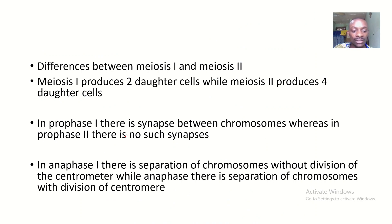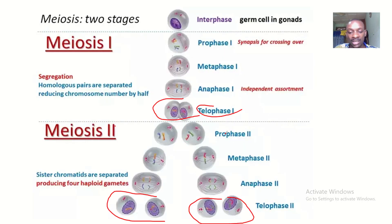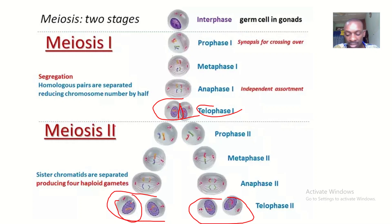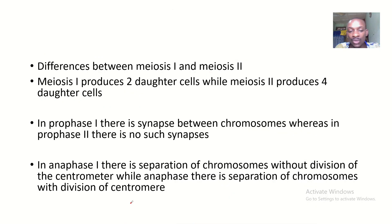In myosis 1, there is synapsis between chromosomes, whereas in myosis 2, there is no such synapsis. The synapsis between two chromosomes — you could see there's a joint — that's a synapsis between one chromosome and another chromosome. But in myosis 2, there's a complete division between the daughter cells, so there is no synapsis in myosis 2.